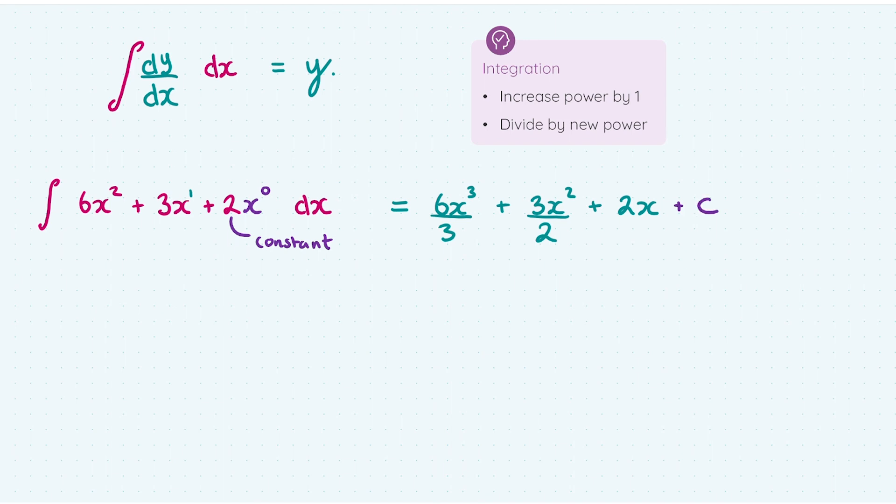And then one final step is we have to add in a plus C to the end of our function. And this is what we call the constant of integration. Why do we add in the constant of integration? Well, imagine we're doing the opposite process of differentiation. Differentiation deletes a constant. If there was a constant in the original function, when we differentiate it, it would go to nothing. So we have to consider, what if there was a constant there? So we just add a plus C to allow for that to happen.